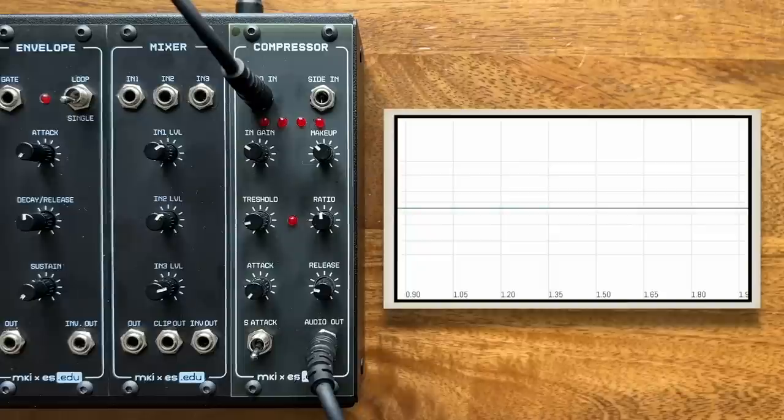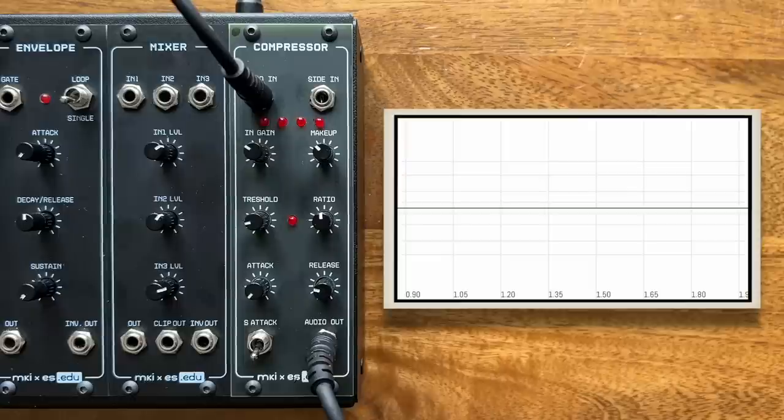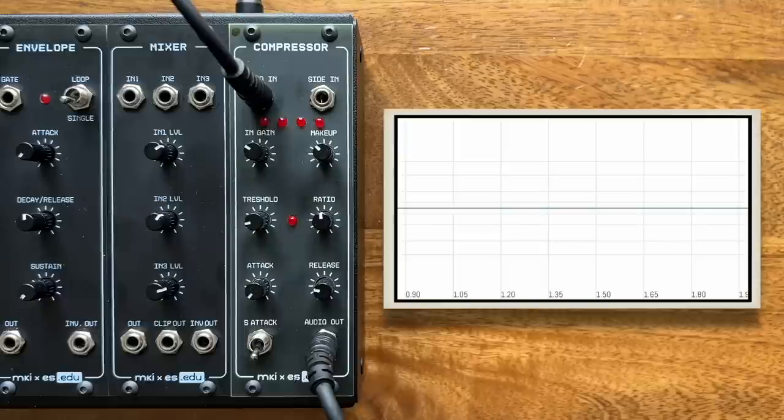Great. Next, let's compress a beat coming from a 909 type drum machine. The individual 909 voices generally have much longer tails, so you really have to play with attack and release to get it to sound good.